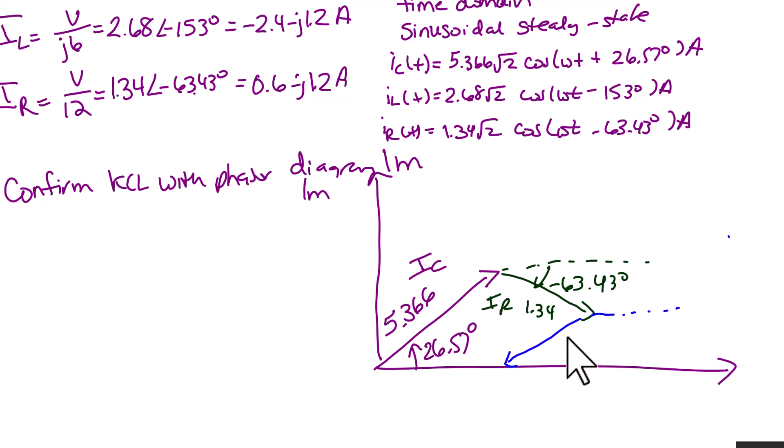And then we are going to make the vector IL with an angle of negative 153 degrees. And it has a length of 2.68. And then this sums to IS which is equal to 3 with an angle of 0 degrees.